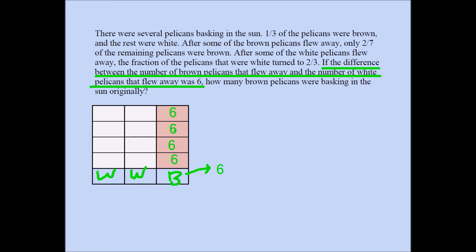How many brown pelicans were there originally? If each box represents six, then we have six, six, six, six, six — and the six that flew away. My final answer is five times six, or thirty. Originally there were thirty brown pelicans basking in the sun. That's my answer: thirty.